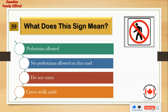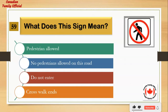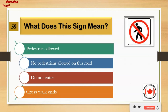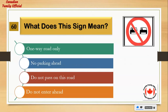What does this sign mean? Number 1: pedestrians allowed. Number 2: no pedestrians allowed on this road. Number 3: do not enter. Number 4: crosswalk ends. And the answer is: no pedestrians allowed on this road.